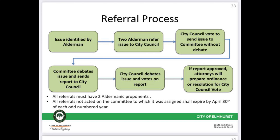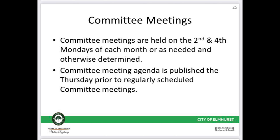The committee comes to its conclusion — often after discussion at multiple meetings — and issues a report, which is the committee's recommendation for action by the full city council. The committee report is placed on the next city council agenda for consideration. If the city council approves the committee report, with or without changes, attorneys then prepare an ordinance or resolution for final approval, which typically takes place at the next city council meeting.